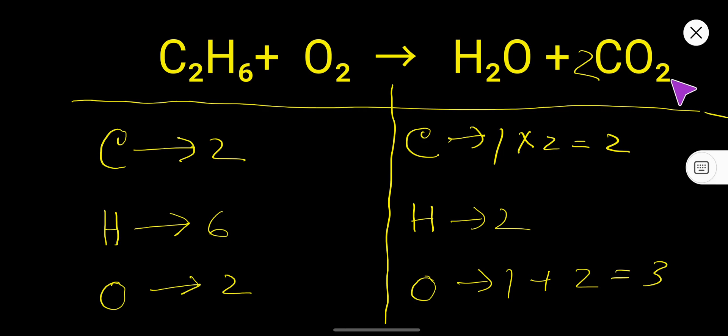The number of oxygen here will be, this is subscript, this is coefficient. So 2 times 2 is 4. So here you have to sense here 4. So now you have 5 oxygen.